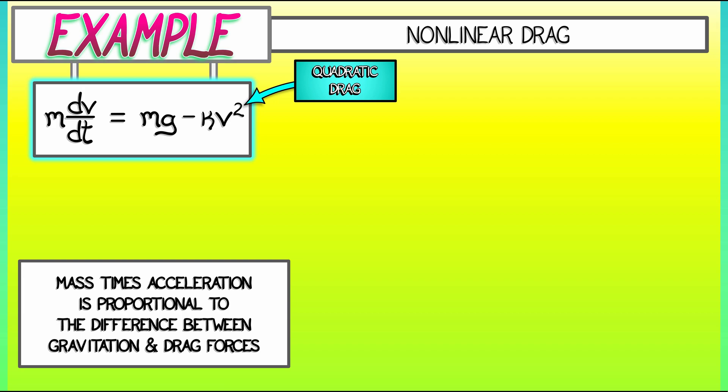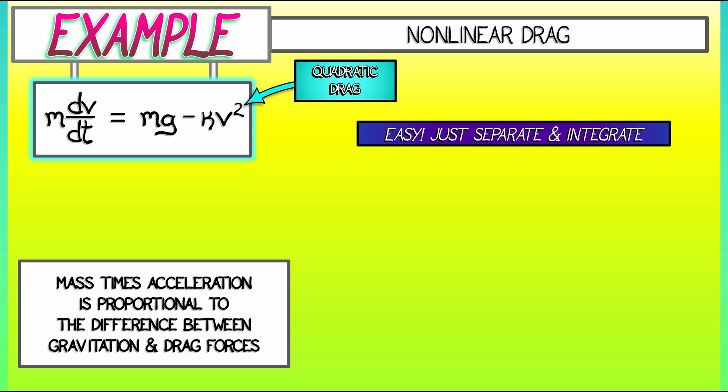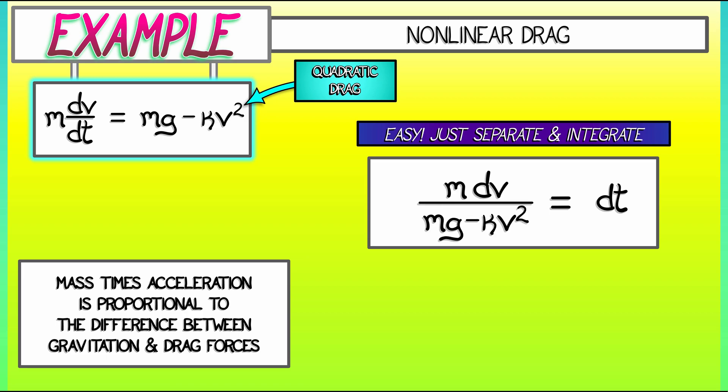Well, we can just do the same thing that we did previously. Separate out the t terms on one side, the v terms on the other, and integrate. Multiplying through by dt, on the right we have dt. On the left, dividing both sides by mg minus kappa v squared, we have m times dv divided by mg minus kappa v squared. All right, almost done. We just got to integrate both sides. I'll tell you what, I'll take the right-hand side. I'll integrate dt for you. Boom. Done.